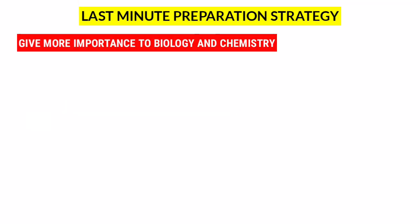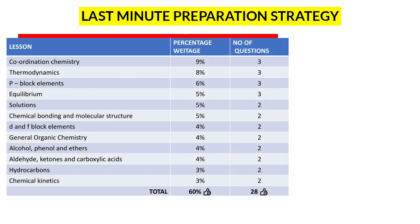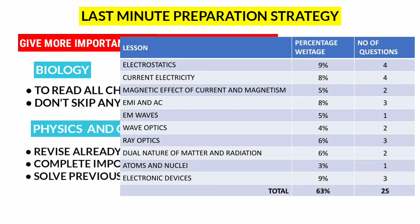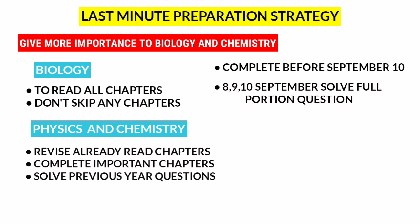Revise biology and chemistry first; don't skip any chapters in biology — complete all chapters. Then revise physics and chemistry, covering the important chapters. Solve previous year questions. Complete physics, chemistry, and biology by September 10. Follow the day 3-8 procedure and complete the full-portion tests. On September 11 and 12, the last two days, revise the chapters from the past days.